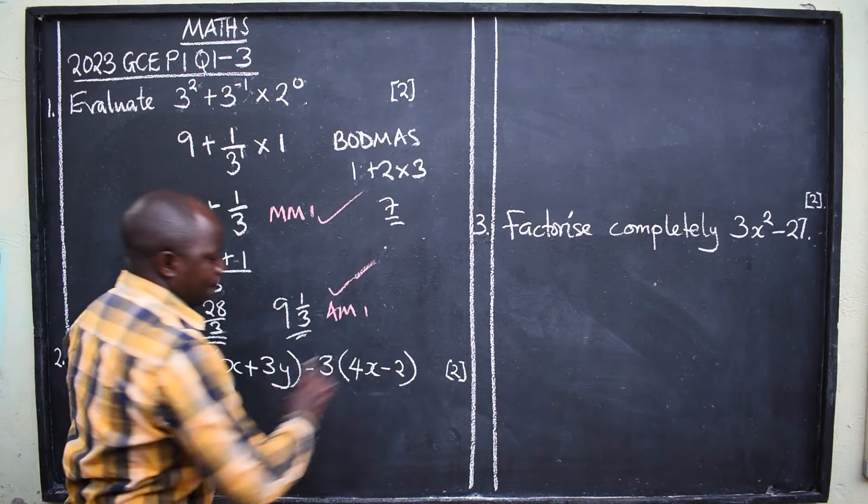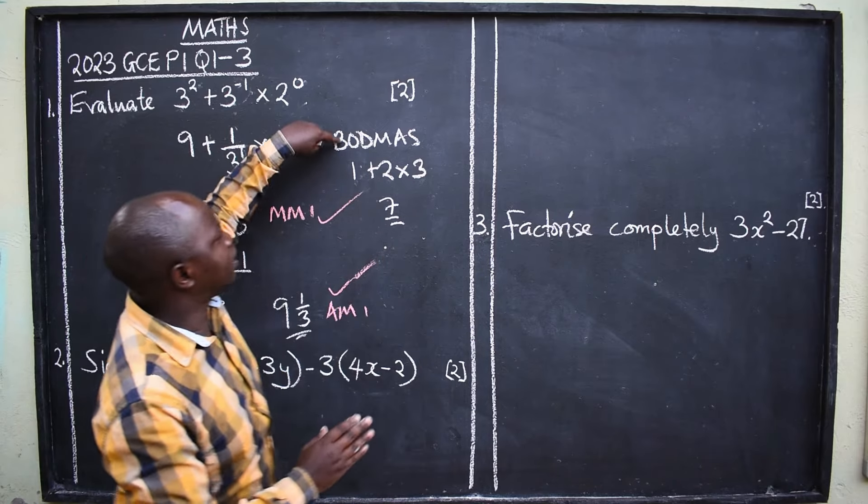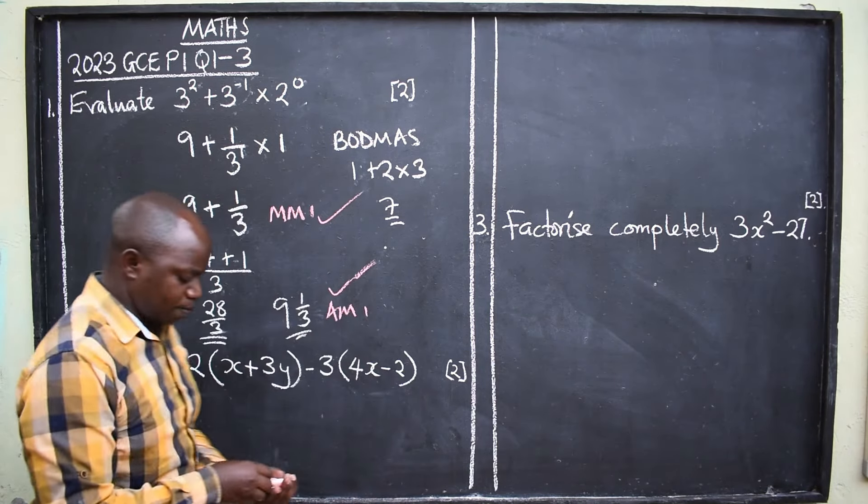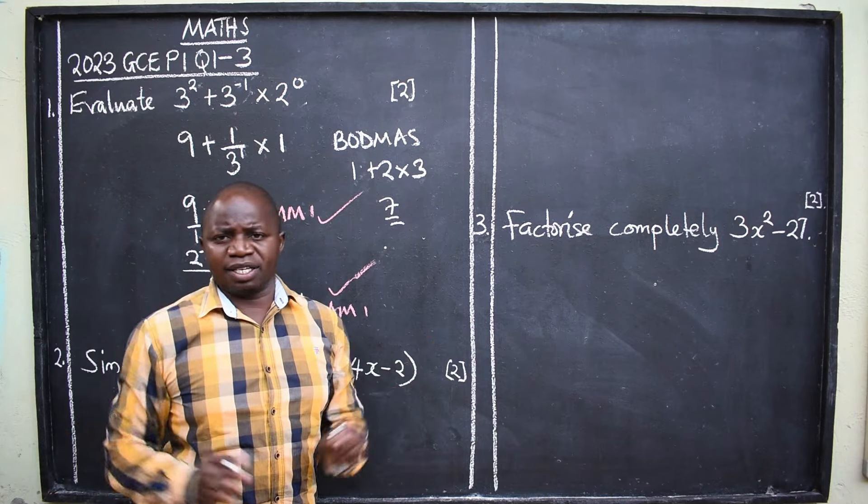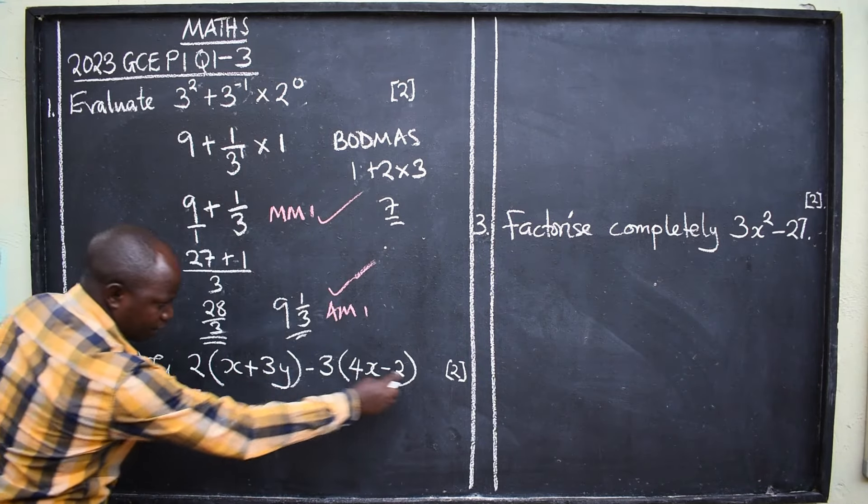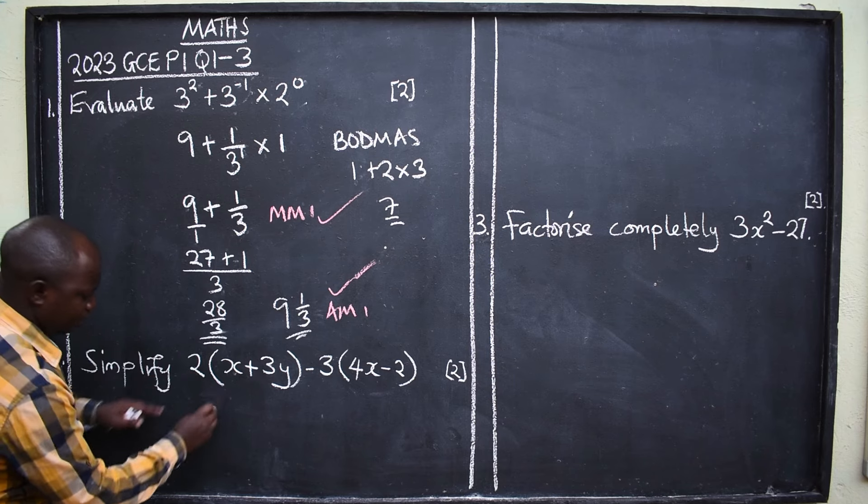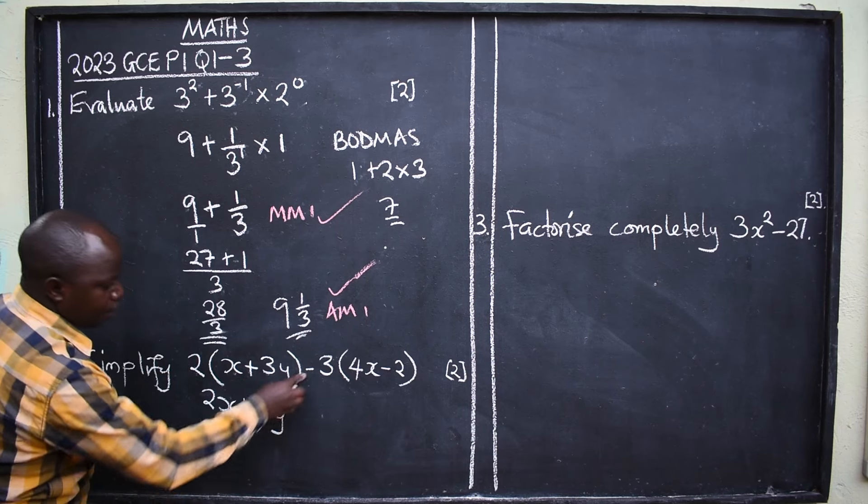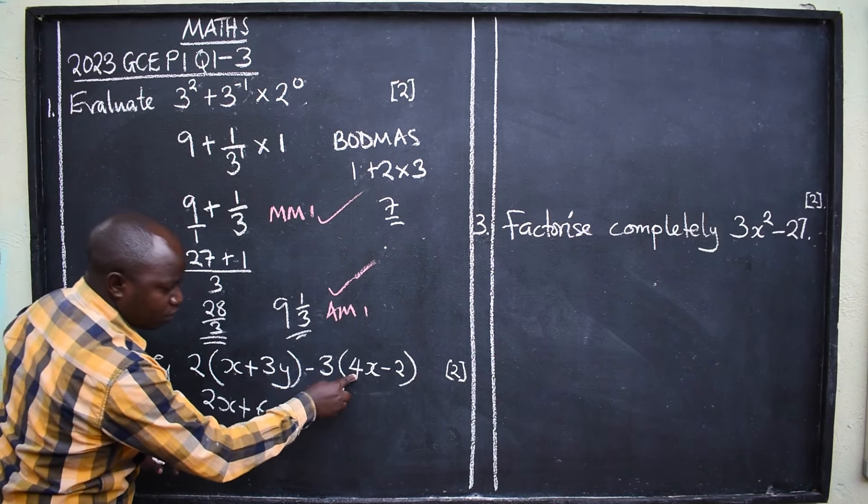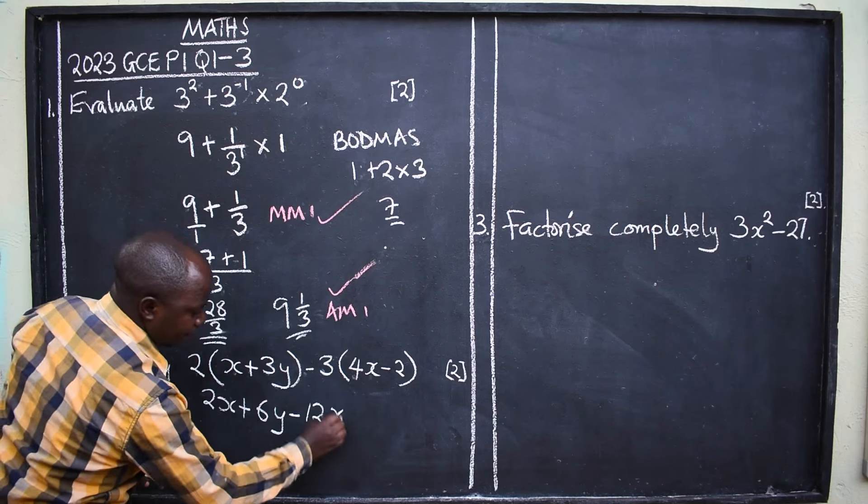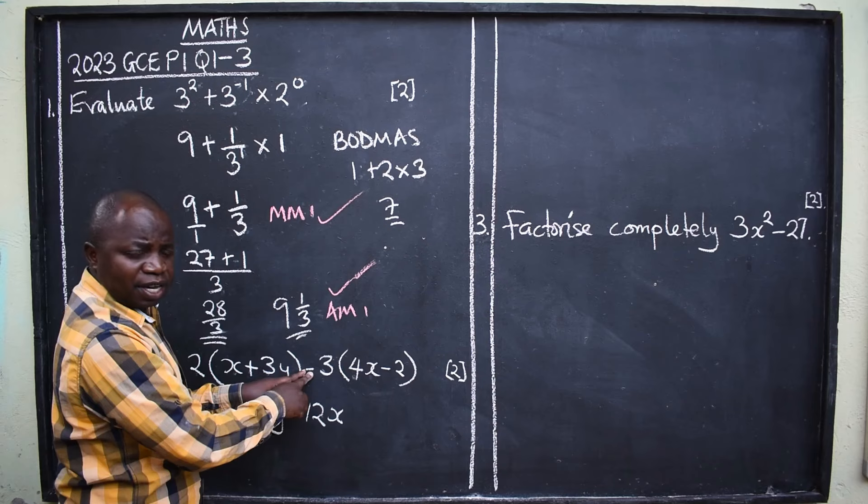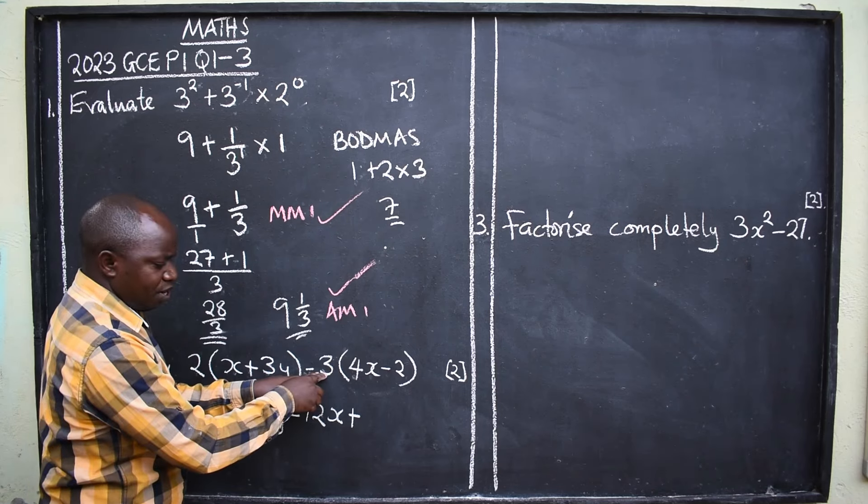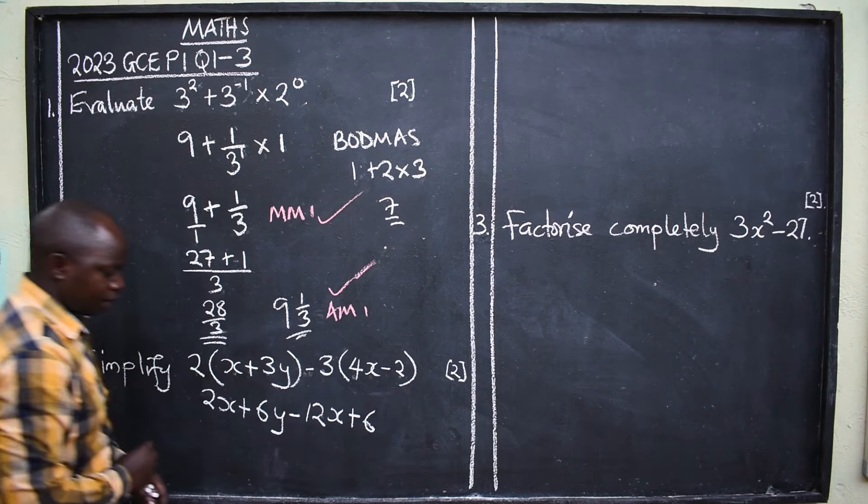The question has got brackets here. So if the question has got brackets, that is where you are going to start from. Remove the brackets. But how do you go about it? You start multiplying. If it doesn't have, you go straight and collect like terms. So here you are going to remove the brackets. We are going to say 2 times x, it will be 2x here. Plus 2 times 3 here, it will give us 6y. Minus 3 times 4 will give us a 12. Then this negative, this is where you need to be very careful when you are multiplying. This negative and negative will change to positive. You see that? Then 3 times 2 will give us a 6. That is where we are going to be.